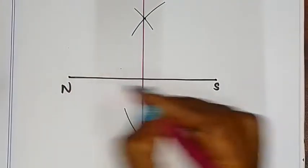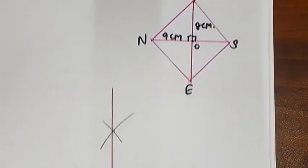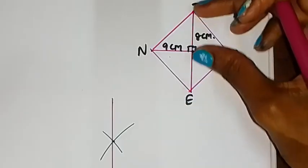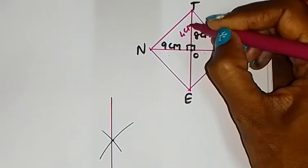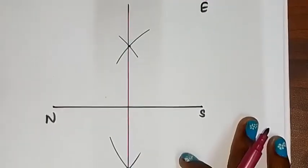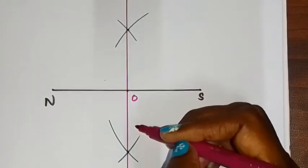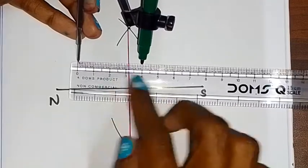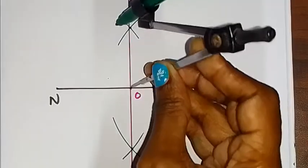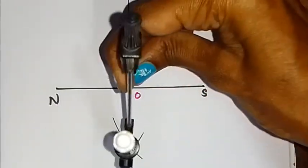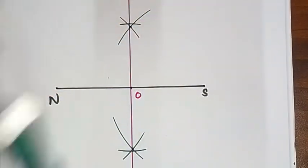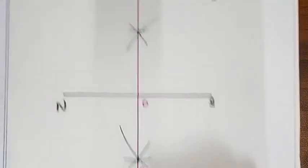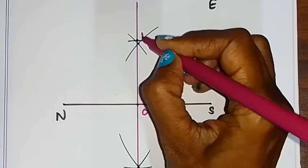The total NS is 9 cm, so each half is 4.5 cm. The midpoint O gives OT equal to 4 cm and OE equal to 4 cm, since ET is 8 cm total divided in half. Using a scale, mark 4 cm along the perpendicular bisector on both sides of the midpoint to locate points E and T. Join all four vertices N, E, S, T to complete the rhombus.